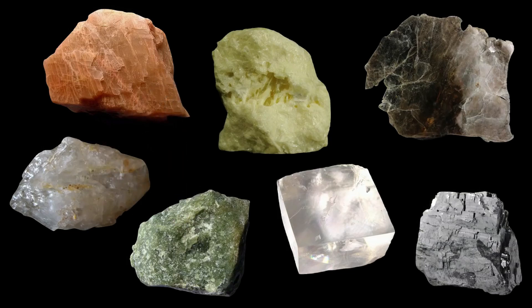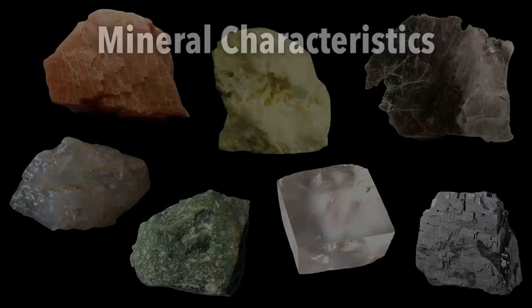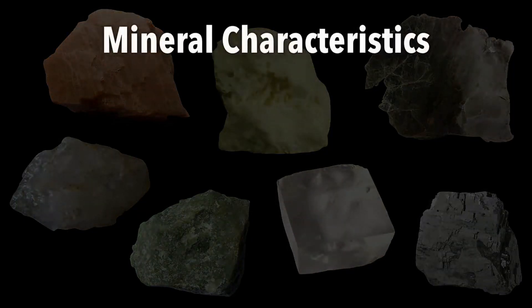One of our jobs is to be able to identify these minerals based on their characteristics. The most obvious is color, and that's sometimes useful — for example, in the case of sulfur, which is a very distinctive yellow. However, keep in mind that there are other yellow minerals and many minerals come in a variety of colors, so color is not always the most reliable characteristic for identification.